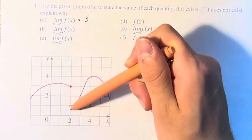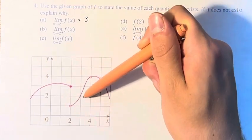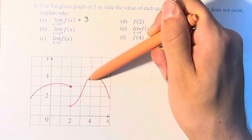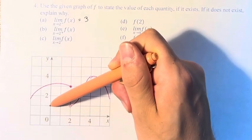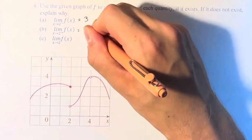Similarly, as we approach 2 from the left, or sorry, from the right, given by this plus sign, we see it approaches this point right here, which has a y value of 1, which means that the limit is equal to 1.